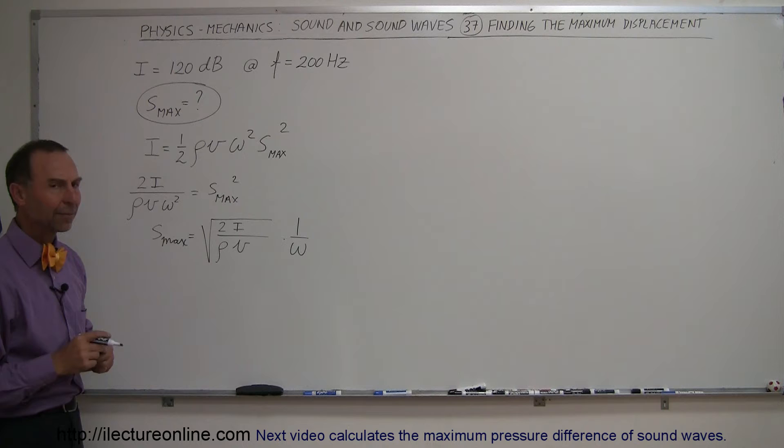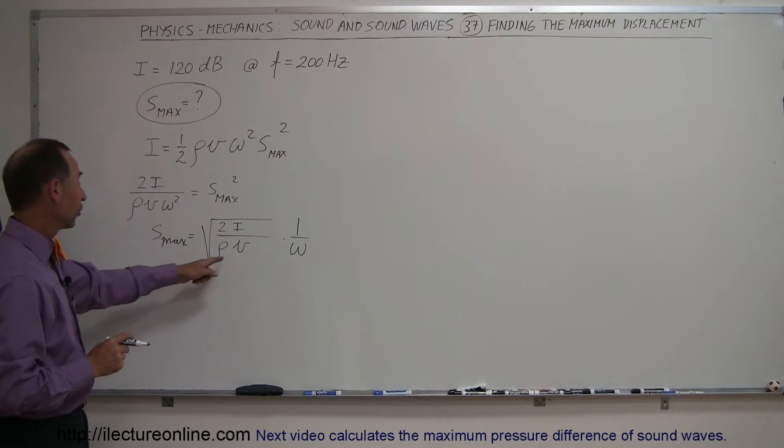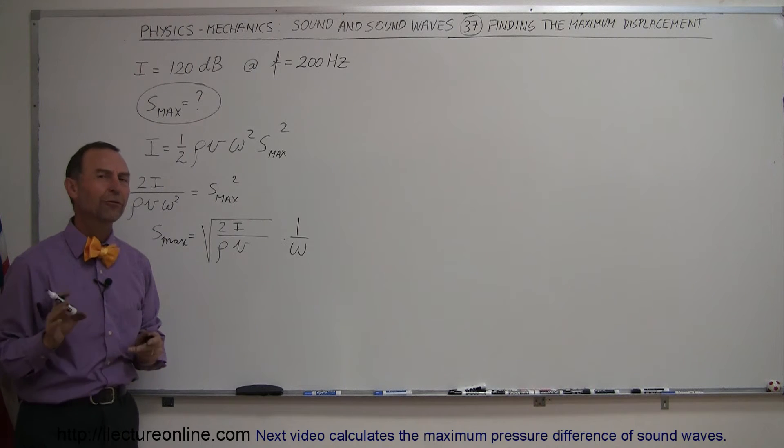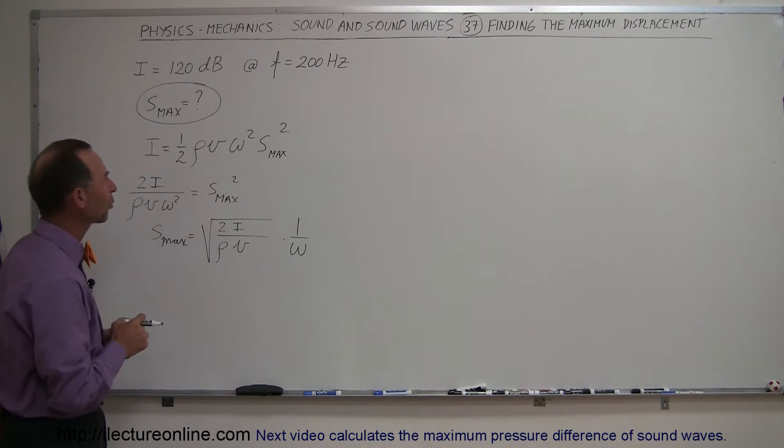Remember that omega is 2π times the frequency. We know the density and the velocity, and now the intensity is expressed in decibels, so we have to convert that to watts per square meter.